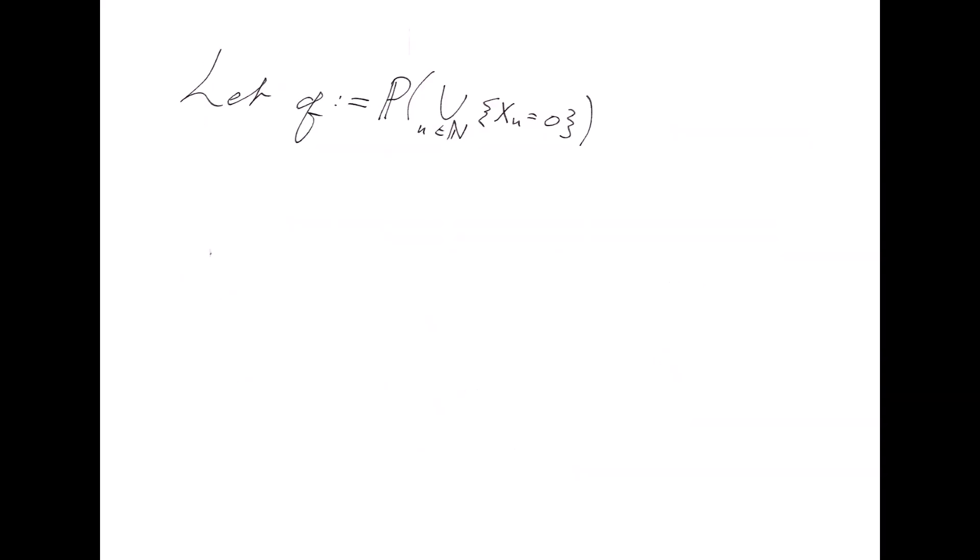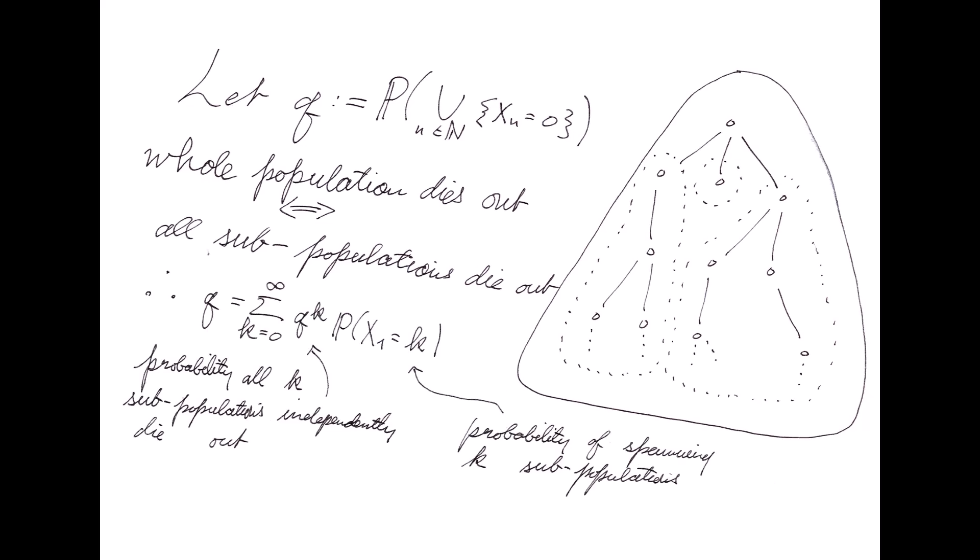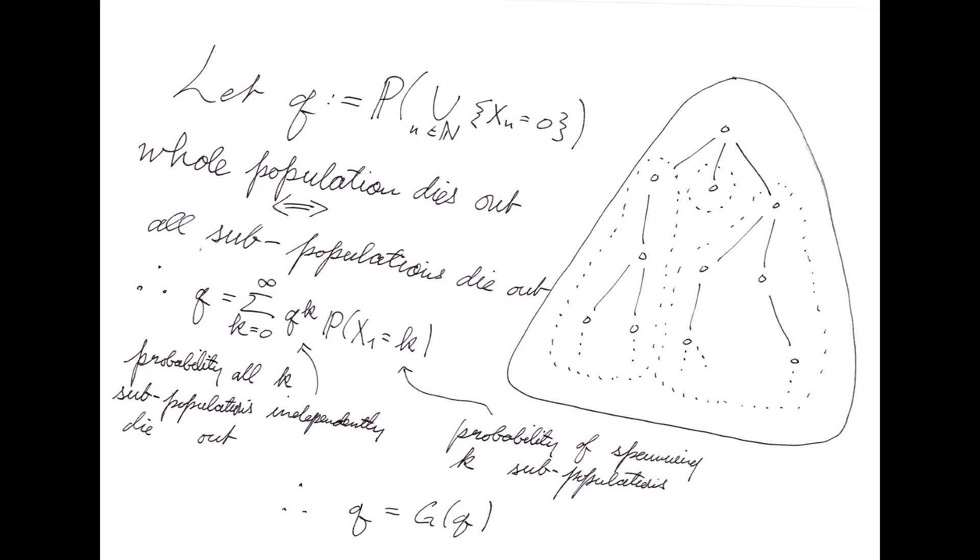Perhaps the most natural question to ask about a branching process is, what is the probability that population goes extinct given we have initially one member? Let q be the probability the population dies out. We condition on the number of offspring of the first member. Supposing patient 0 has k offspring, the whole population dies out if and only if the k subpopulations also die out. Since the families are independent, these k families die out with probability q to the k. We thus have q equals the sum over k from k equals 0 to infinity of q to the k times the probability that x1 equals k, which is just g evaluated at q. So we have to solve the equation q equals g of q.